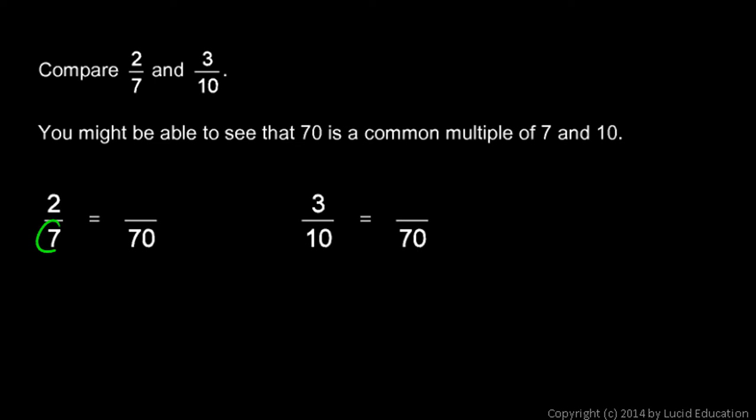Look at my denominator, 7. To get from 7 to 70, what did we do? We have to multiply by 10. So that means I also need to multiply the numerator by 10. So the 2 times 10 is 20.